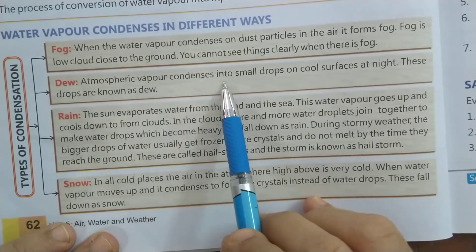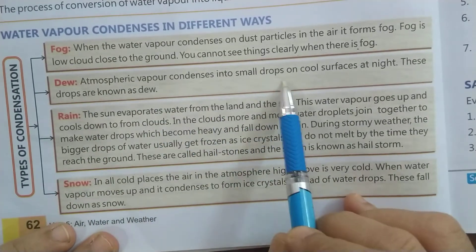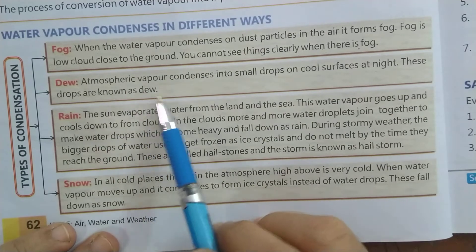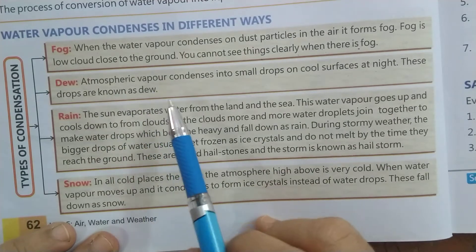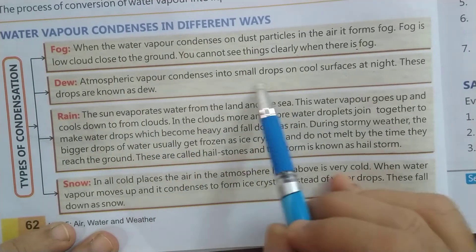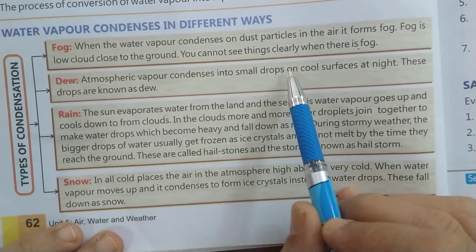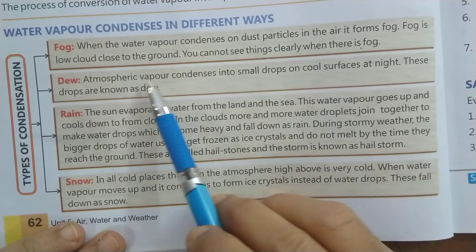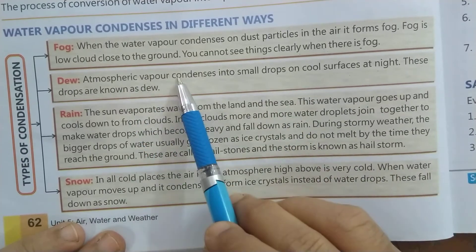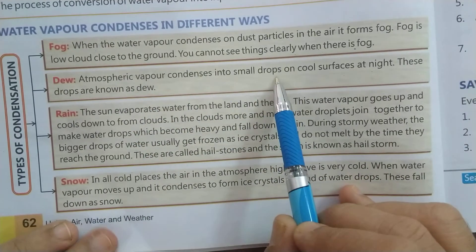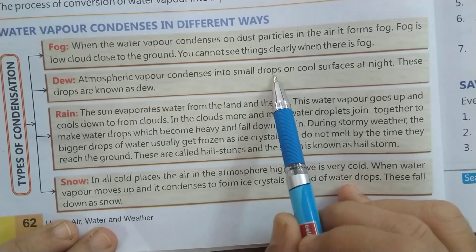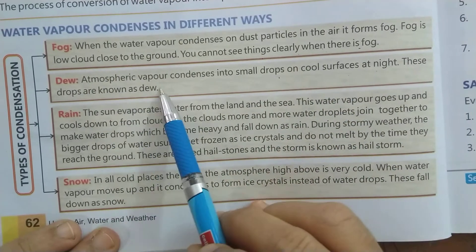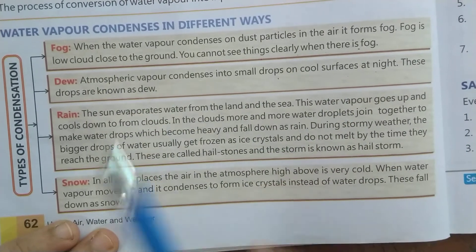Dew: atmospheric vapor condenses into small drops on cool surfaces at night. These drops are known as dew. सुबह जब आप उठते हो तो आप देखते हो कि घास के ऊपर छोटी-छोटी water droplets होते हैं — वो कहाँ से होते हैं? जो water vapor होता है वो cool होकर water drops में convert हो जाता है। यही हमको सुबह dew के form में दिखते हैं।